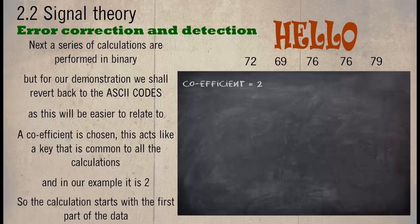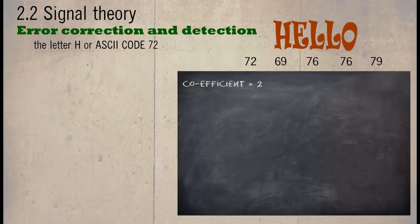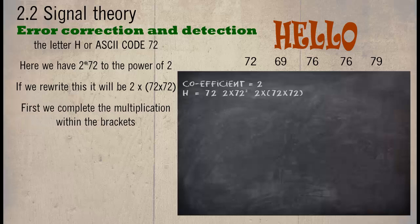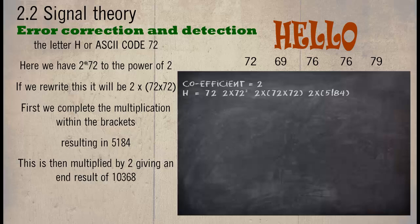So the calculation starts with the first part of the data, the letter H or ASCII code 72. Here we have 2 times 72 to the power of 2. If we rewrite this, then it will be 2 times 72 times 72. First, we complete the multiplication within the brackets, resulting in 5184. This is then multiplied by 2, giving an end result of 10368.